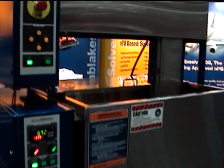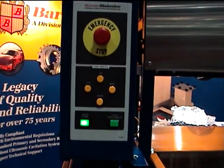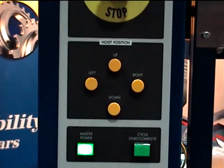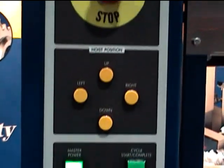Here's the degreaser. Here's the control for the hoist itself. If you have to manually control it, you can with these buttons. There's the emergency stop.